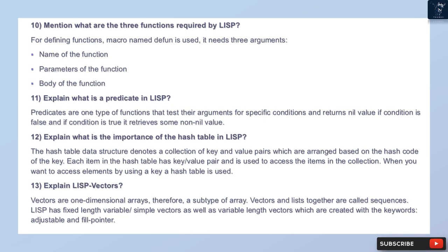Question 11: Explain what a predicate is in Lisp. Predicates are a type of function that test their arguments for specific conditions. They return nil if the condition is false, and if the condition is true they return some non-nil value.